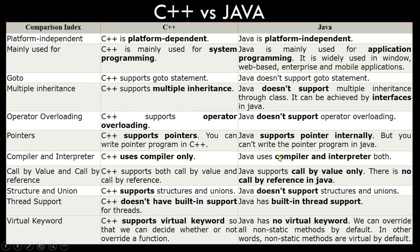C++ uses only a compiler, while Java uses both compiler and interpreter. Regarding call by value and call by reference: C++ supports both, but Java supports only call by value since we cannot create pointers. C++ supports structures and unions; Java does not. For thread support, C++ does not have built-in multi-threading, while Java has built-in multi-threading, allowing multiple processes to run simultaneously. C++ supports virtual keywords to decide whether to override a function. In Java there is no virtual keyword — all non-static methods are virtual by default.